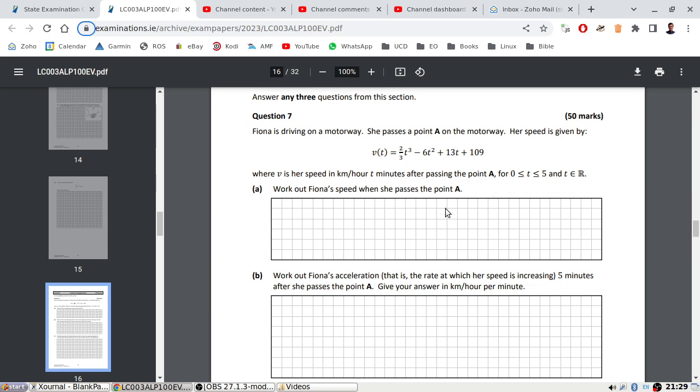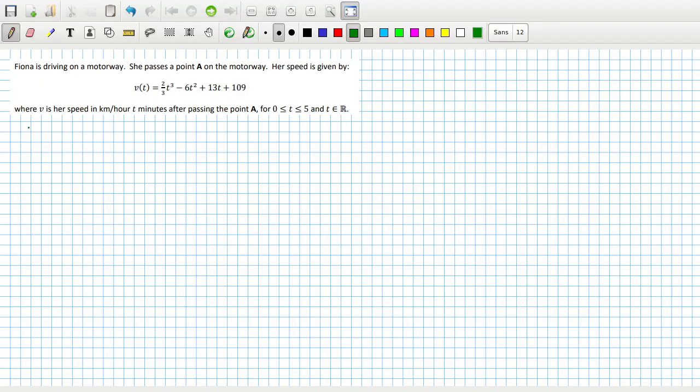Work out beyond speed when she passes point A. A is the beginning point here. In other words, it's just asking us to calculate V(0). So V(0) would just be 109 kilometers per hour.